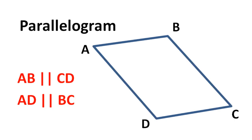The next four-sided quadrilateral is a parallelogram, in which the opposite pairs of sides are parallel to each other. Because they are parallel to each other, you get some interesting relationships between the angles.